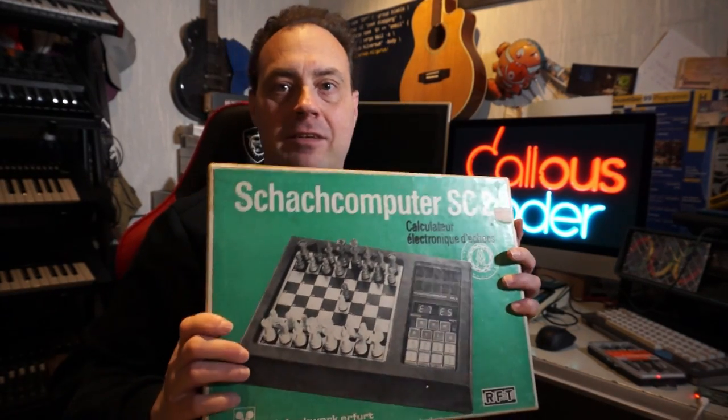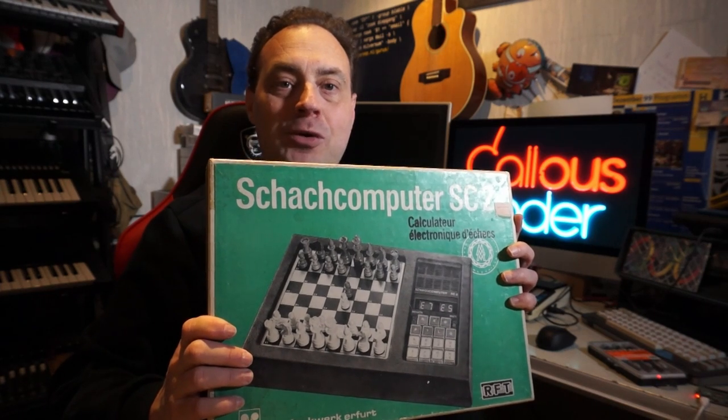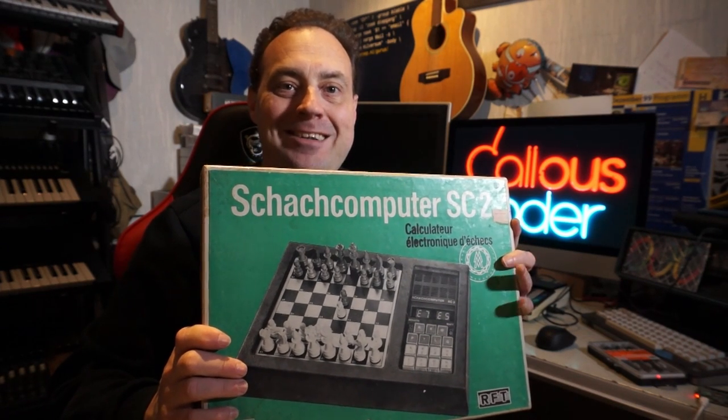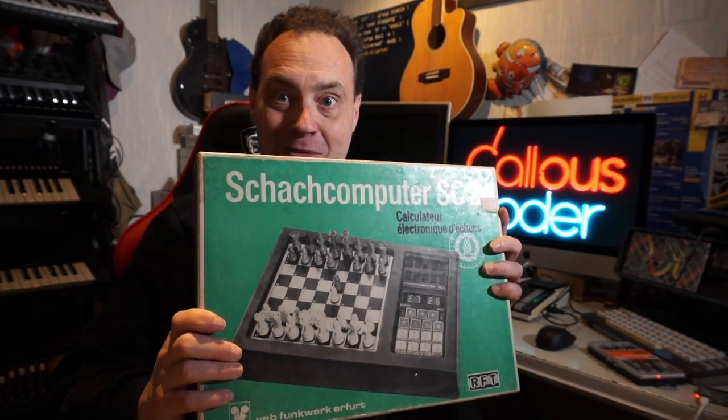Welcome to Calliskode and today a very special video with this chess computer, the SC2 from the Deutsche Demokratische Republik, East Germany.